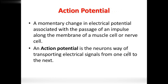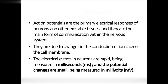Action potential means electrical signals transmitted from one cell to another — that is conduction. Action potentials are the primary electrical responses of neurons, smooth muscle, and skeletal muscle. They are due to changes in ion conduction. The duration is in milliseconds and changes are measured in millivolts.